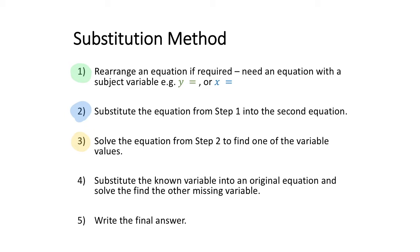So if we're looking at x and y, you might find an x value by solving that equation. Once you know one of the variables, you can take that variable and substitute it back into one of the original equations, which will enable you to find the second variable. Once you know both variables, then you can write the answer.